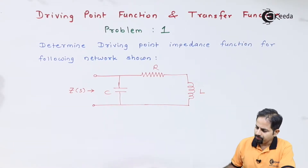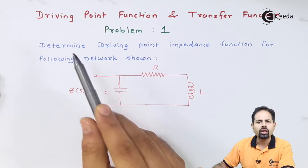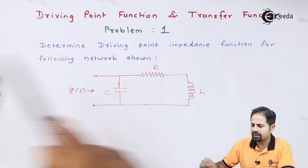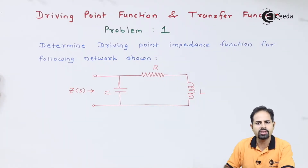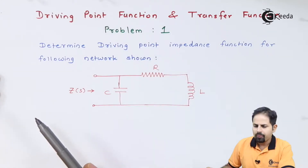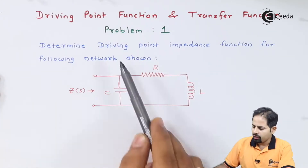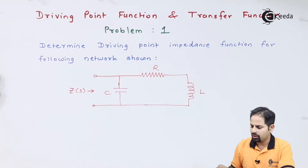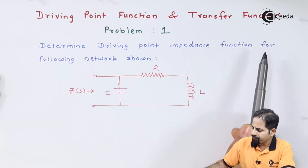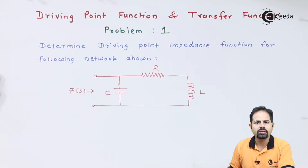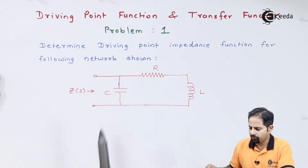Here you can see this is problem number one on the topic called driving point function and transfer function, which we have already seen. According to this topic, the problem is to determine the driving point impedance — that means Z, or Z(S) — for the following network. Now there are only two terminals, meaning there is one pair of terminals, so it is a one-port network.